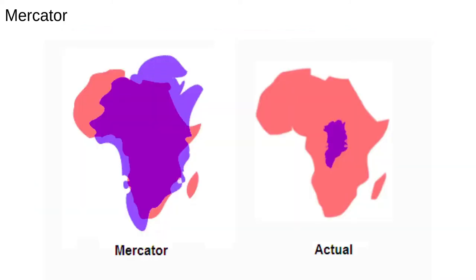The Mercator projection greatly exaggerates some areas and reduces others. It portrays Greenland as bigger than Australia and similar in size to Africa, when it's actually around half as large as Australia and much, much smaller than Africa. Other examples are that it shows Alaska and Brazil as similar in size, when Brazil is about five times bigger, and Antarctica appears to be larger than Africa, Eurasia and North America combined, when it's roughly the size of Australia.